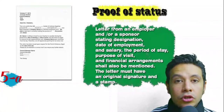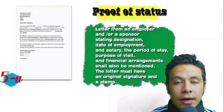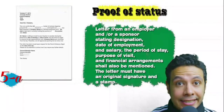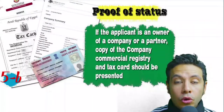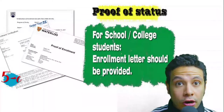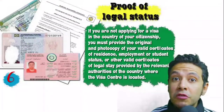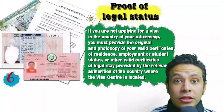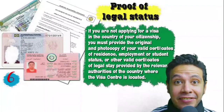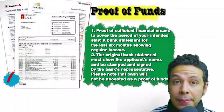In most visa applications you will need to provide proof of status. If you are an employee, provide a letter from your employer or HR department mentioning your name, work details, salary, address, and contact numbers — with an original signature and stamp. If you own a business, your commercial registry and tax card must be presented. If you are a student, an enrollment letter from your university or school is required. If applying from a different country, you need proof of legal residence there.